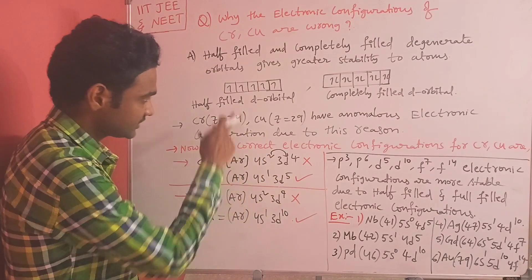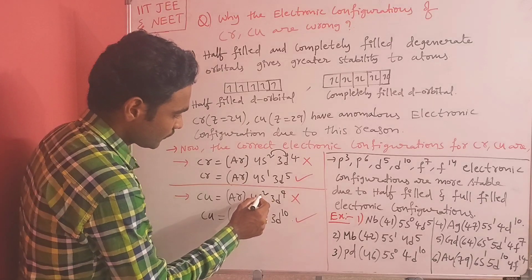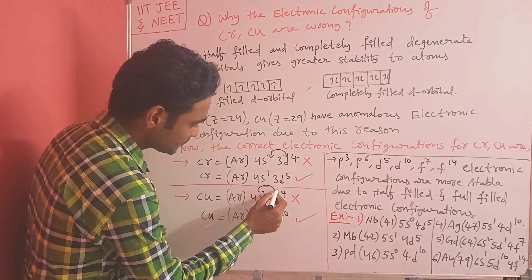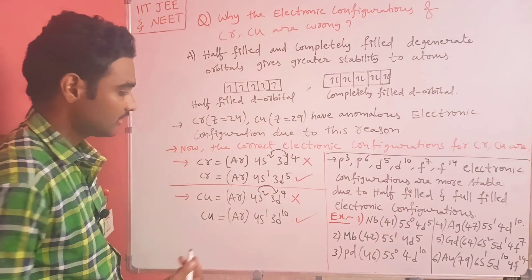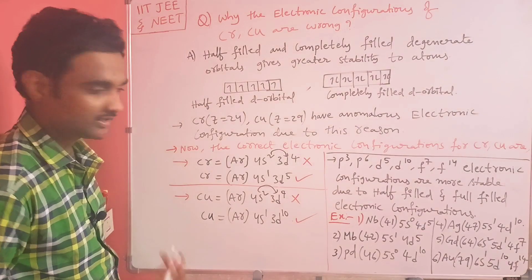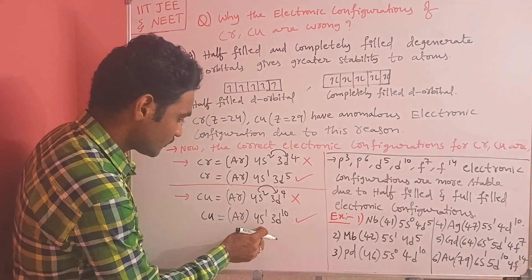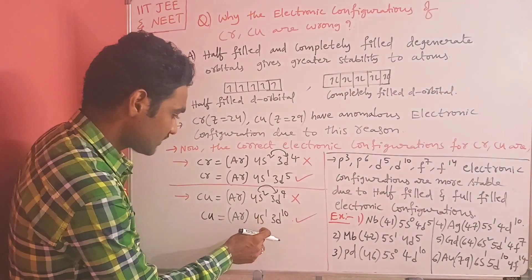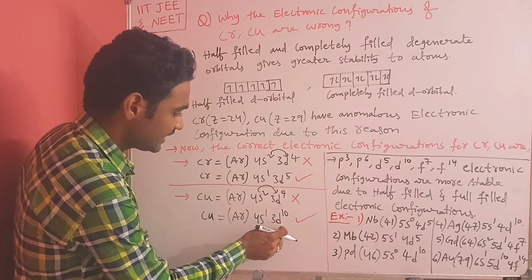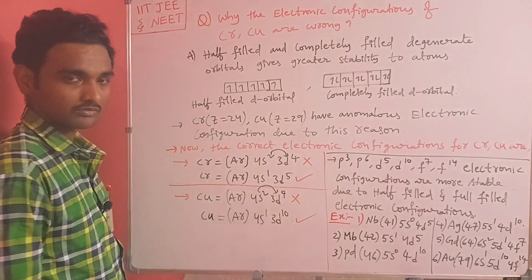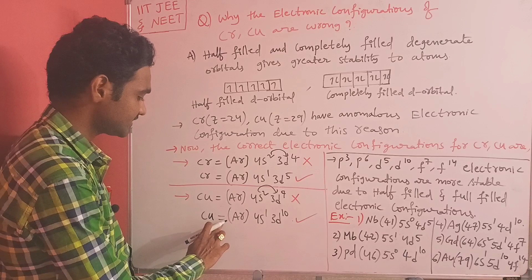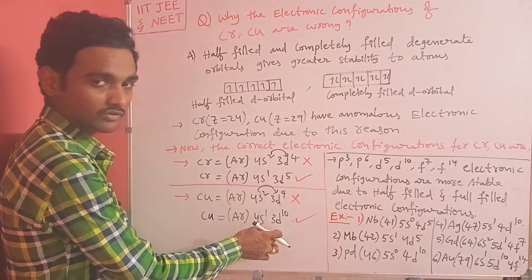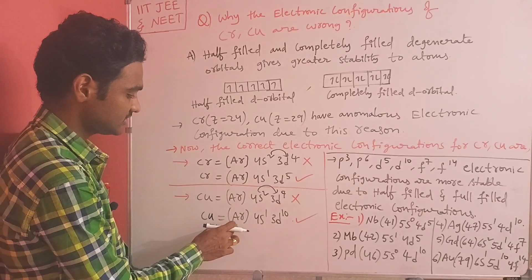Copper is the same. We wrote [Ar] 4s2 3d9, but one of the 4s electrons jumps to 3d, giving a fully filled 3d10, which is highly stable. So the correct electronic configuration of copper is [Ar] 4s1 3d10. These corrected configurations for chromium and copper are correct; the previously written ones were wrong.